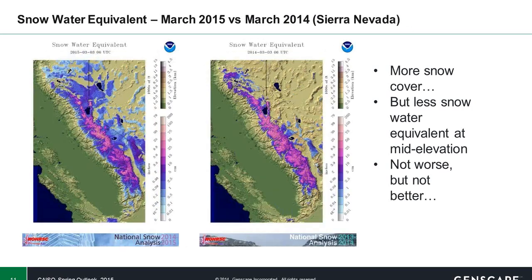Similar story in the Sierra Nevada, in Southern California and Central California. We do see, similar to Northern California, more widespread coverage, and again, lower snow water equivalent values at the mid-elevations.